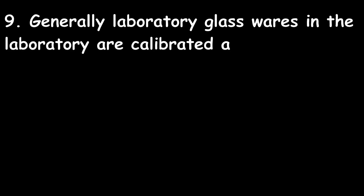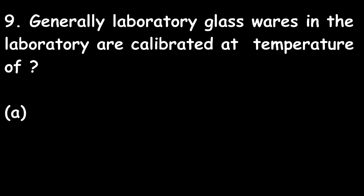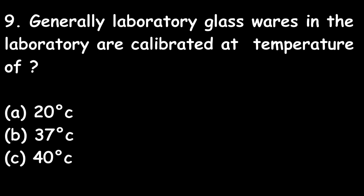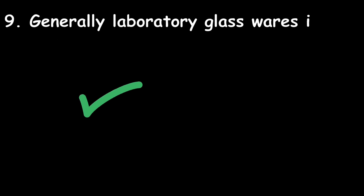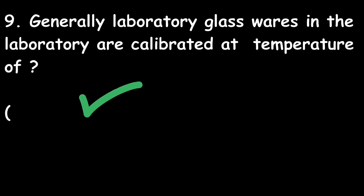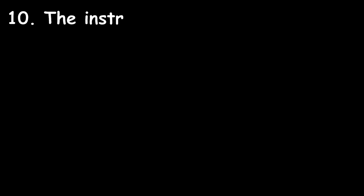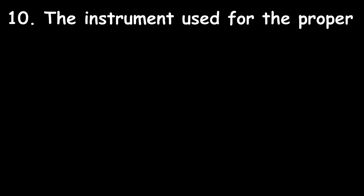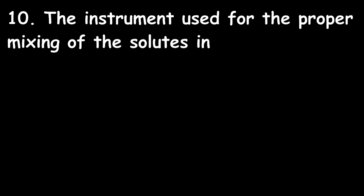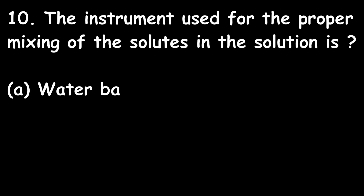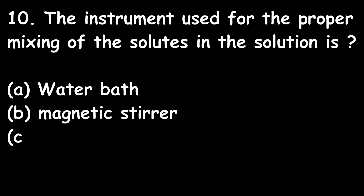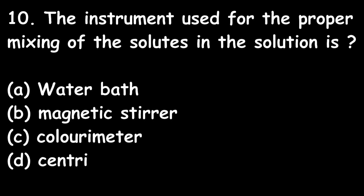Question 9: Laboratory glassware are generally calibrated at a temperature of: Option A: 20°C; Option B: 37°C; Option C: 40°C; Option D: 30°C. The right answer is Option A — 20°C. Question 10: The instrument used for proper mixing of solute in a solution is: Option A: water bath; Option B: magnetic stirrer; Option C: colorimeter; Option D: centrifuge. The right answer is Option B — magnetic stirrer.